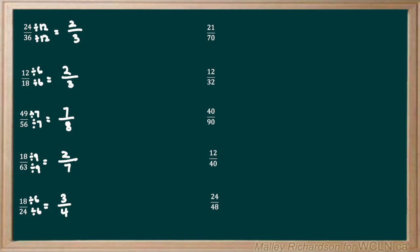Now we have 21 over 70. What's our highest factor that can go into both 21 and 70? We divide our top and bottom by 7. 21 divided by 7 is 3 and 70 divided by 7 is 10. 3 over 10 cannot be reduced down any further, so 3 tenths is our final answer.